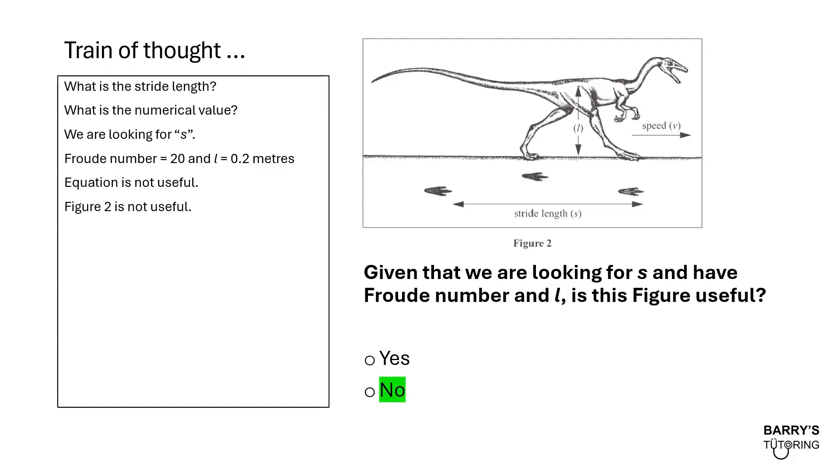How about figure 2? Given that we're looking for S, we have the Froude number and L. Is this figure useful? Unfortunately, it is not. I mean, it does have S and it does have L in it. However, it's not really that useful if we're trying to find values. Remember, that's the whole point of this question. We want to find the stride length and we're looking for the numerical value. So that's not going to be useful. Also, it doesn't have any references to Froude number. Not useful for our purposes.